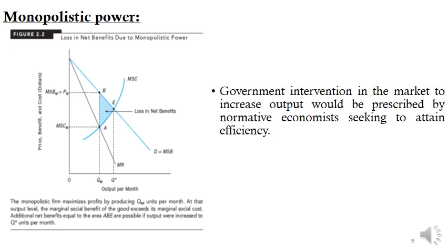Efficiency could be attained in a monopoly market by forcing the monopolist to increase output until price falls to a level equal to marginal social cost. The additional net benefits possible from increasing output from QM to Q* units per month are shown by the triangle area ABE in Figure 2.2. This represents the extra social benefits over extra social costs from increasing monthly output to the point where marginal social benefit equals marginal social cost.